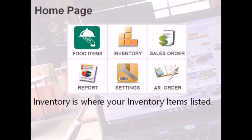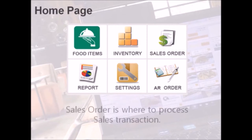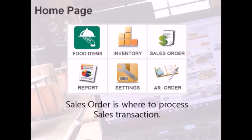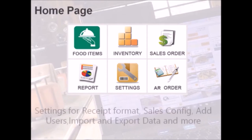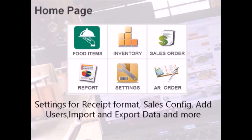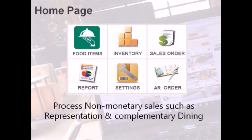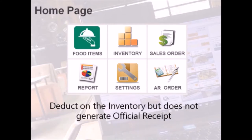Inventory lists all items for management. Sales order handles all sales transactions. Report contains various report generation including X and Z readings. Settings contain sales configuration as well as import and export data options. AR order is for reporting non-monetary sales such as representation and complimentary dining. These deduct items in the inventory but do not generate an official receipt.